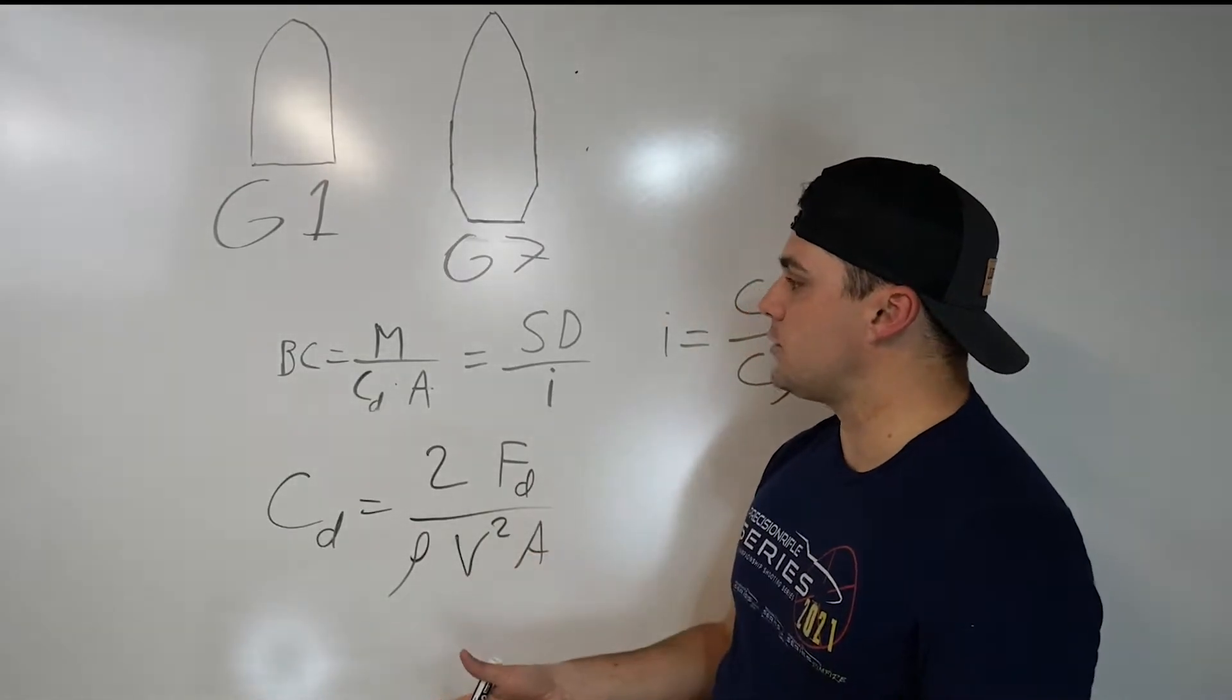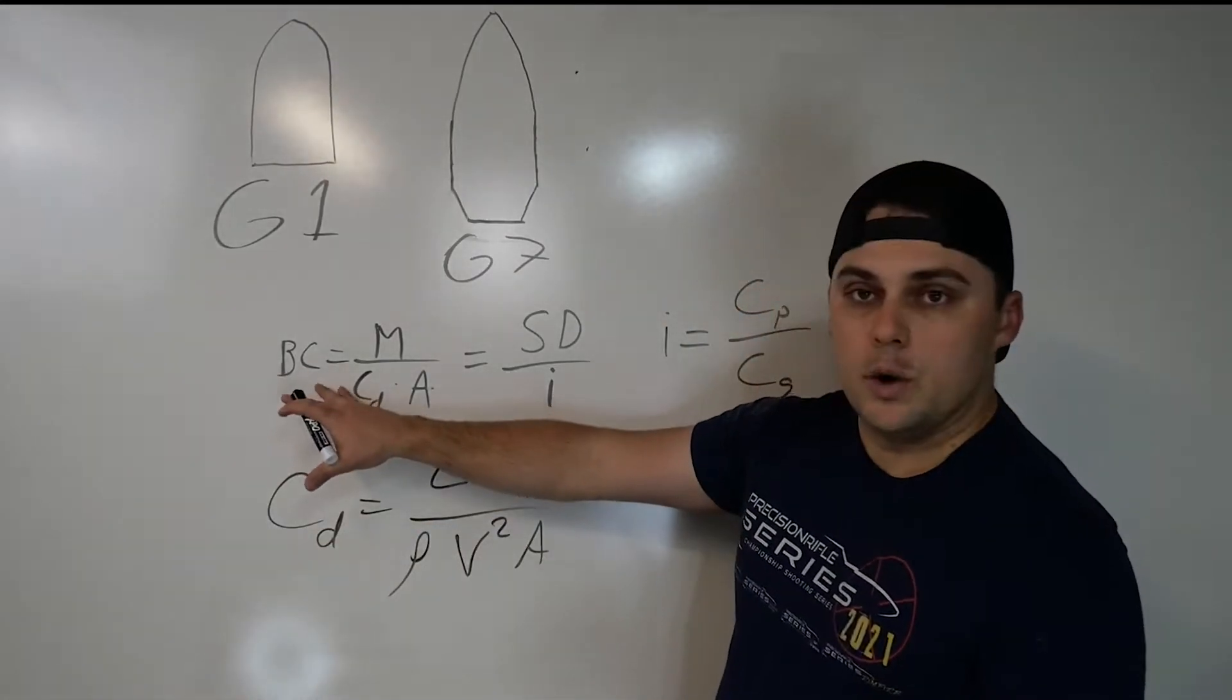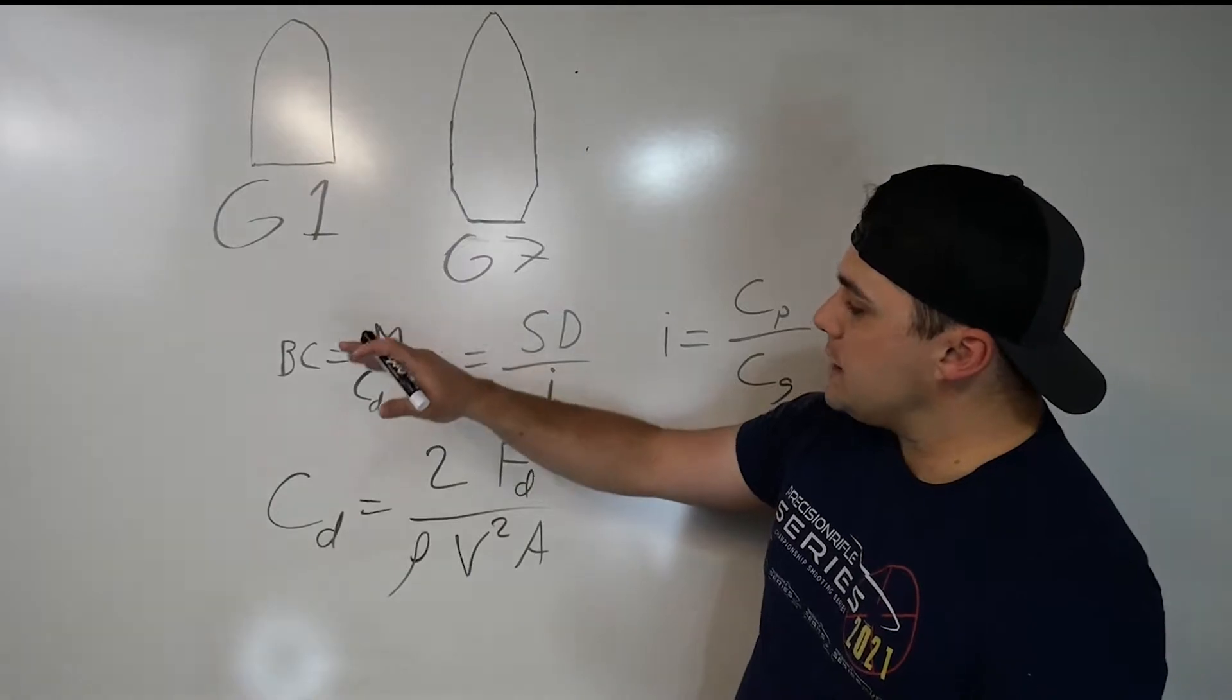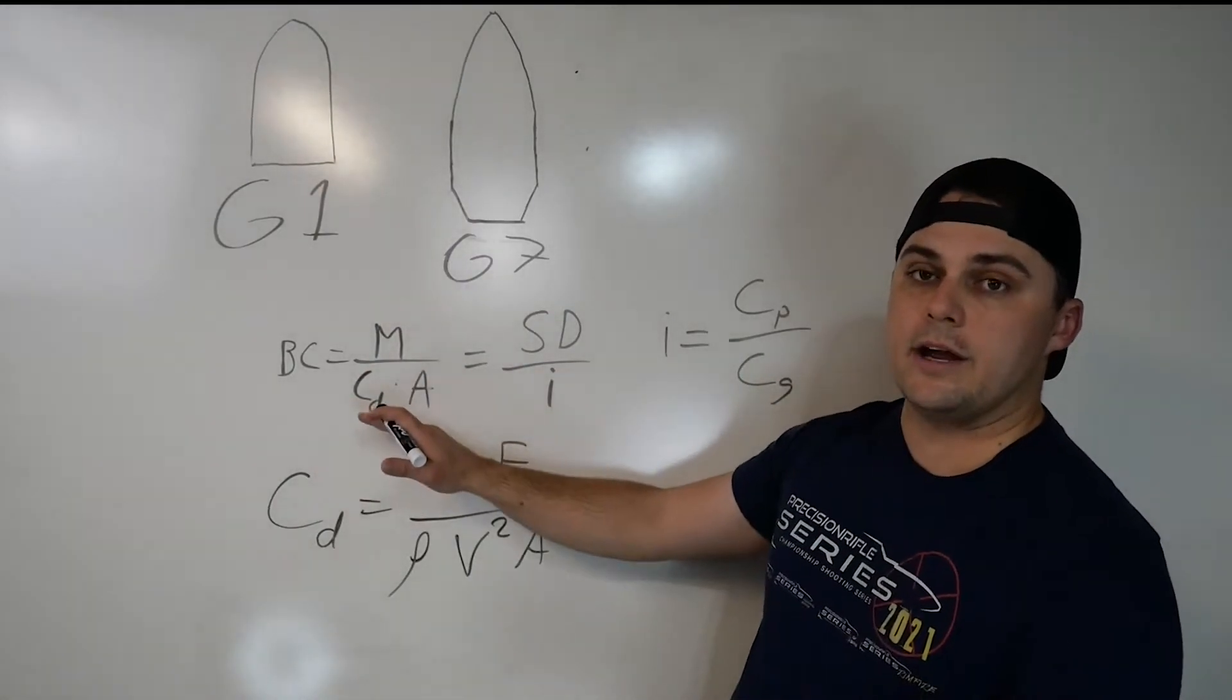So first things first, ballistic coefficient, the equation for it is the mass divided by the drag coefficient times the area.